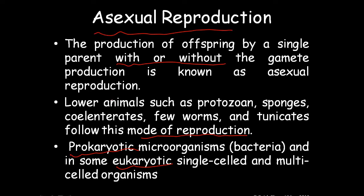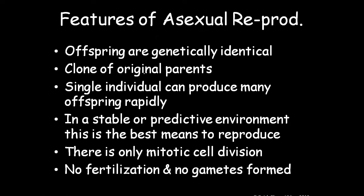The lower segment of organisms follow this type of reproduction, which rapidly multiplies into many organisms. Some features of asexual reproduction: offspring are genetically identical — clones of the original parent. A single individual can produce many offspring rapidly. In favorable conditions they multiply very fast, and during unfavorable or stress conditions they go into spore formation. In a stable or productive environment, this is the best means of reproduction. Only mitotic cell division takes place; no fertilization, no gamete formation.